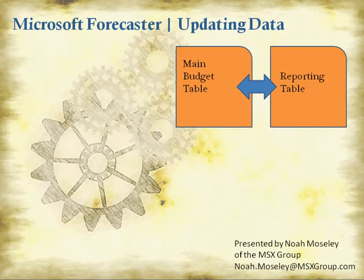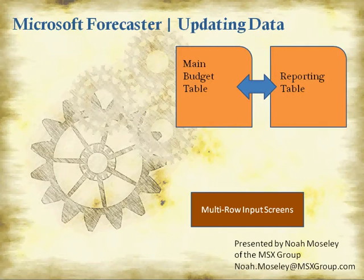The main way of getting data into the main budget and changing data in the main budget is the multi-row input screens. Multi-row input screens will have account numbers running down the left-hand side of the screen. You'll have columns which are typically monthly columns — they might be annual or quarterly columns — and the data you type in there will be stored in the main budget table and copied to the reporting table. Your users will open up these main multi-row input screens and either use formulas for changing or updating values, or just type in the dollar amounts or stats.